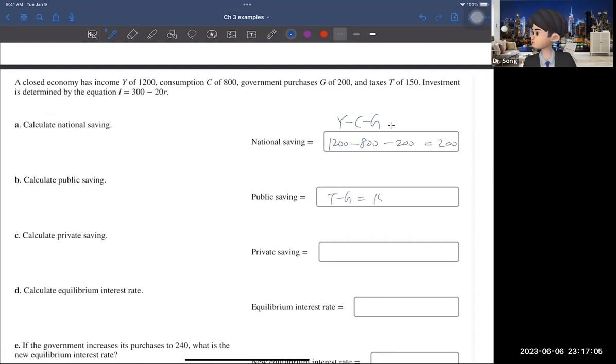So then the answer is $200. Now the public saving is T minus G. And the T is $150. And G is $200. So we have negative 50. So you may think that negative 50 is weird, but that is okay.